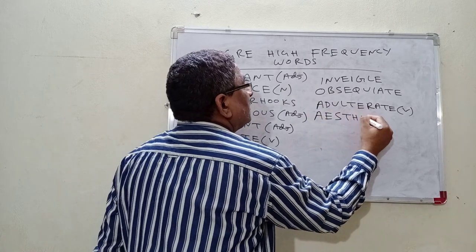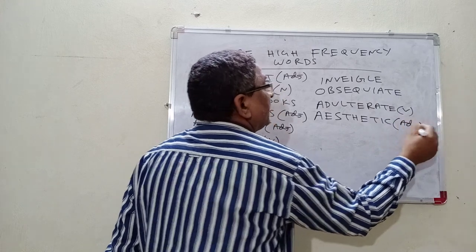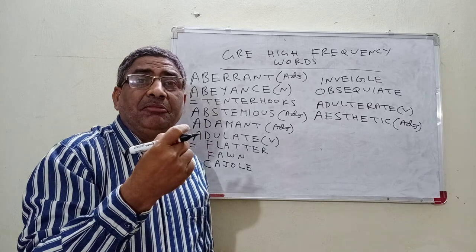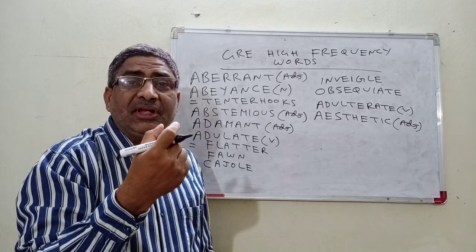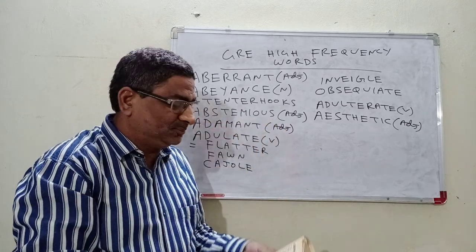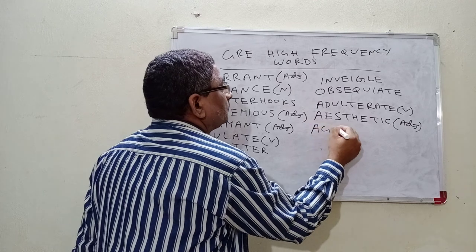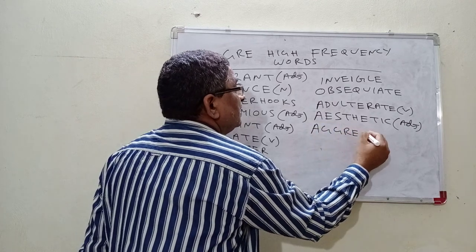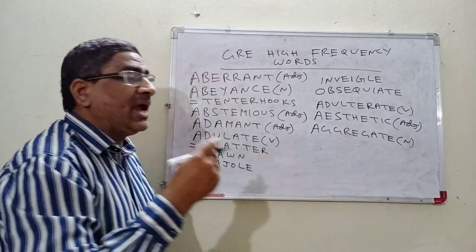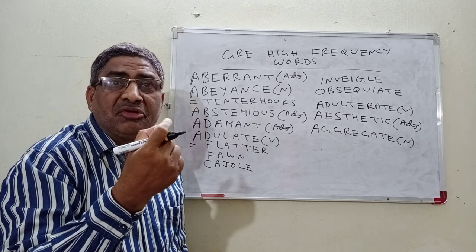Aesthetic — it is an adjective. What is the meaning of aesthetic? Aesthetic means beautiful. If you would like to talk about any artistic beauty, we use the word aesthetic. Next, Aggregate — what is the aggregate of all things? Aggregate means the sum or total.